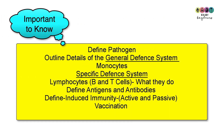This topic doesn't need to be overly detailed — all the information fits on about two A4 pages. You should be able to: define pathogen; outline the general defence system including the second line of defence (e.g. macrophages); discuss the specific defence system covering B cells and T cells — where they're made, where they mature, and what they do; define antigens and antibodies; define induced immunity; distinguish active and passive immunity (artificial and natural with examples); and discuss vaccination.